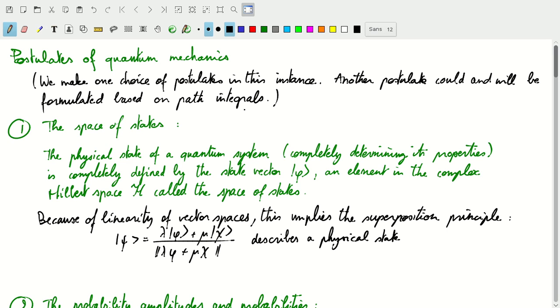Let's start with the first postulate. The first postulate is about the space of states. In the past few videos, we've talked about the Hilbert space and vector spaces. The point is that any physical state of a quantum system can be described by an element in this complex Hilbert space H that we call the space of states. It's completely defined by that state vector. There's no hidden variables, and all of the properties of the quantum system are determined by that quantum state.